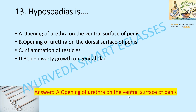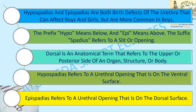Hypospadias is the opening of the urethra on the ventral surface of the penis. Hypospadias and epispadias are both birth defects of the urethra, more common in males. 'Hypo' means below, 'epi' means above, and 'spadias' means a slit or opening. Dorsal refers to the upper or posterior side. So hypospadias has the urethral opening on the ventral (lower) surface, while epispadias refers to the urethral opening on the dorsal (upper/posterior) surface.